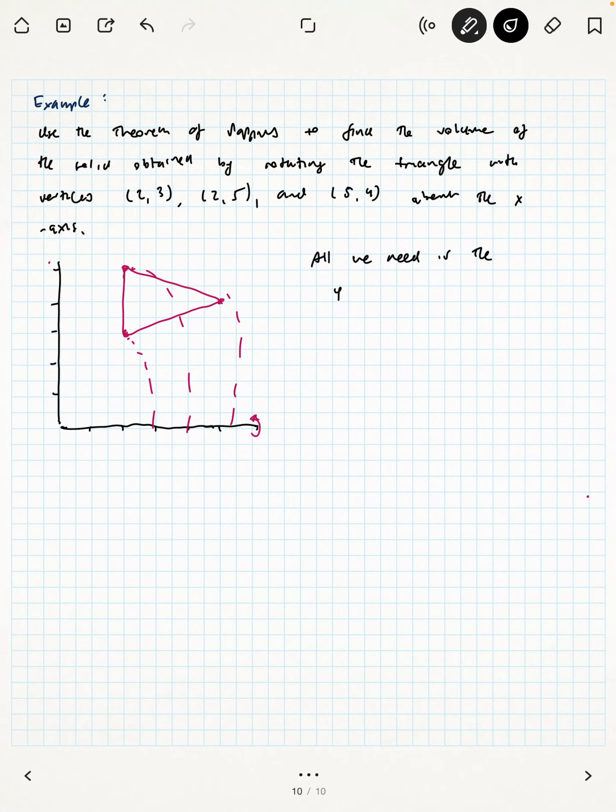So finding the exact location of the centroid isn't necessary though. Here's why. All we need here is the location, the y-coordinate of the centroid. And that is not too hard to find. Why? Well we're assuming that this has a uniform density. And by symmetry, that means the centroid is along the line y = 4.